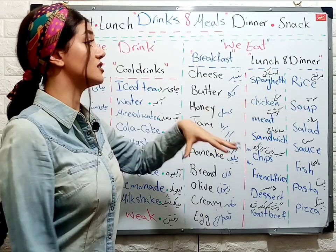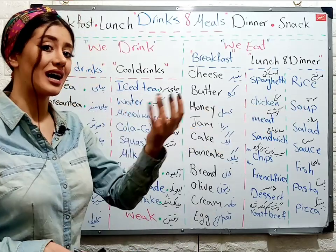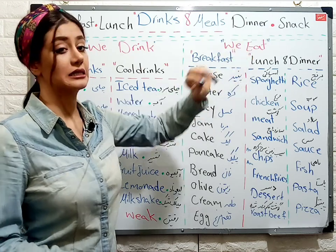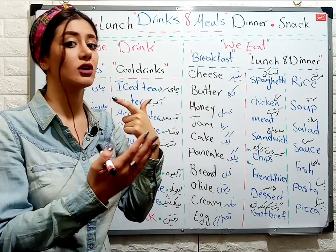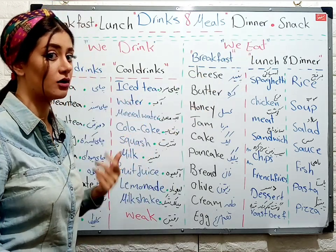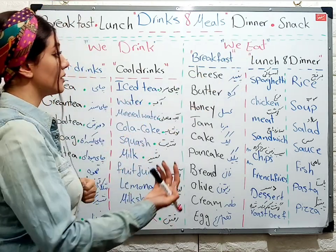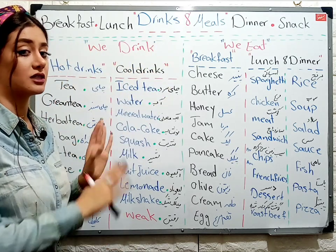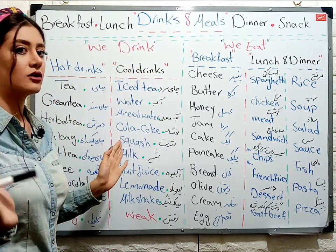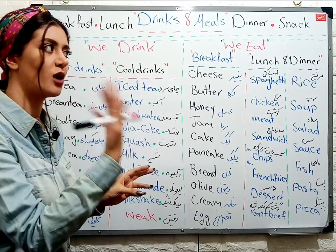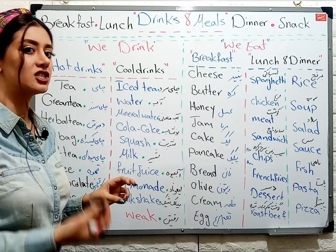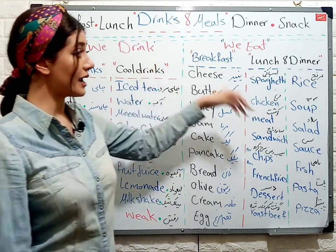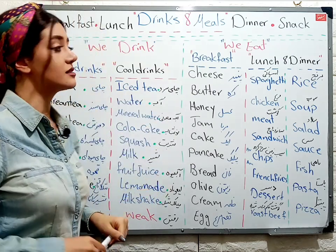Now, meal times — وعده‌های غذایی. We don't drink food — we eat it. میخوریم. Some people mistakenly use the verb 'eat' for drinks. 'We eat water' — in Persian we say میخوریم, but the correct verb in English for drinks is 'drink.' For food we say 'we eat.'